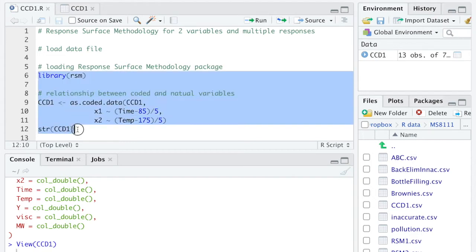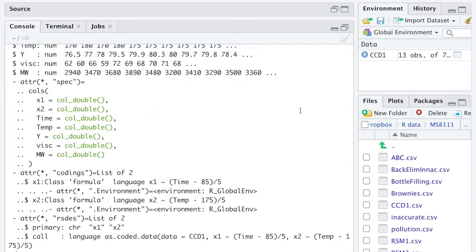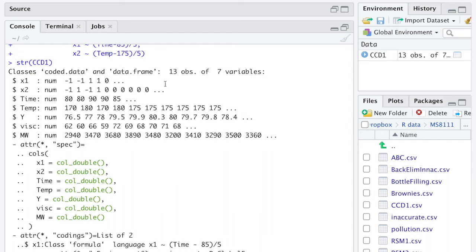Let's run them. We have 13 observations of 7 variables, and all of them are numerical.